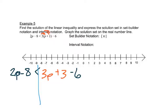So we can combine some like terms here. We'd have 2p minus 8 is less than 3p, and plus 3 minus 6 is minus 3, negative 3.